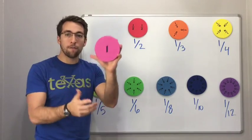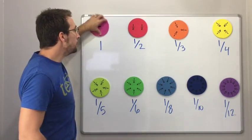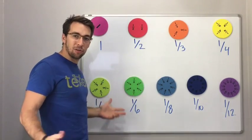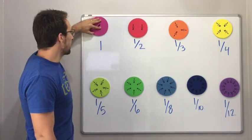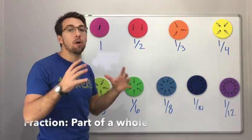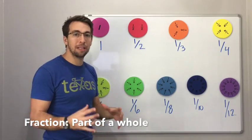So one, we have one full circle. All of these fractions represent circles. And so a fraction is part of a whole. It's not the complete thing.